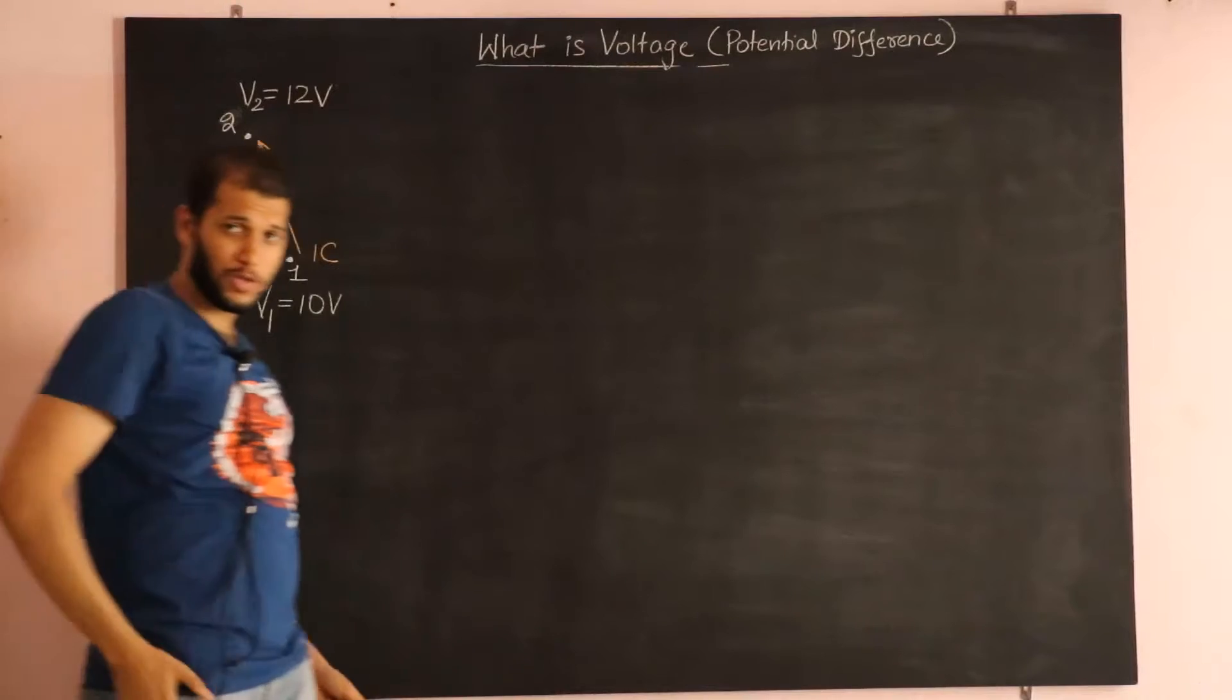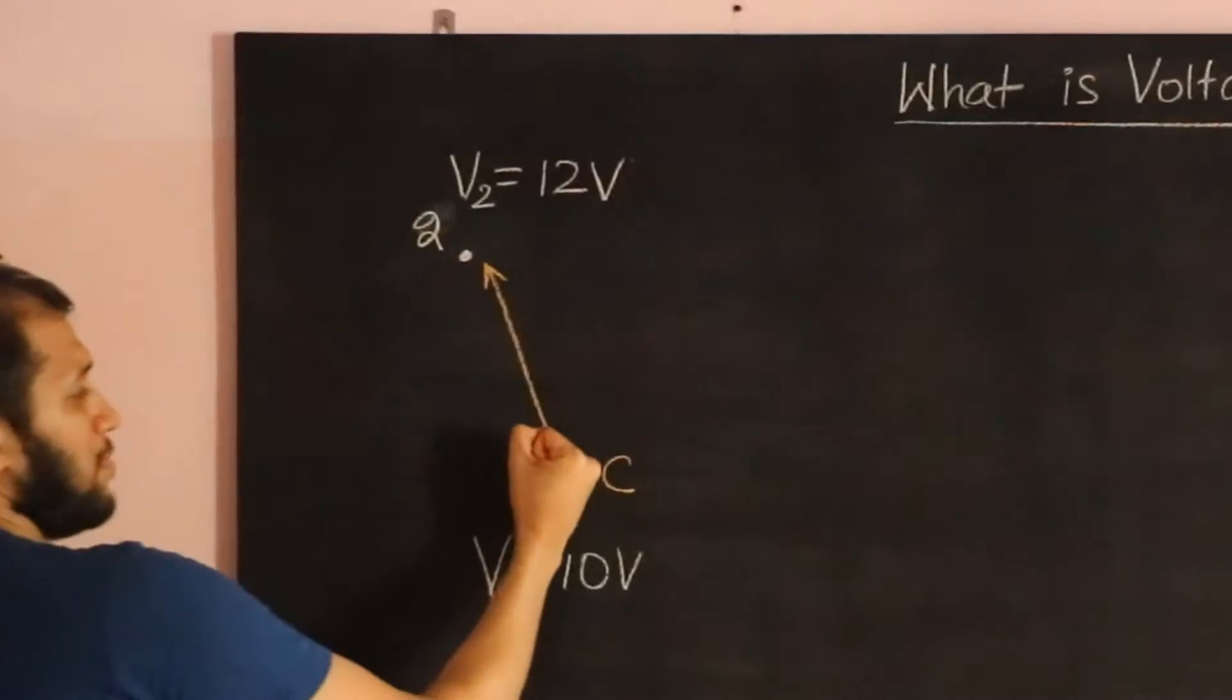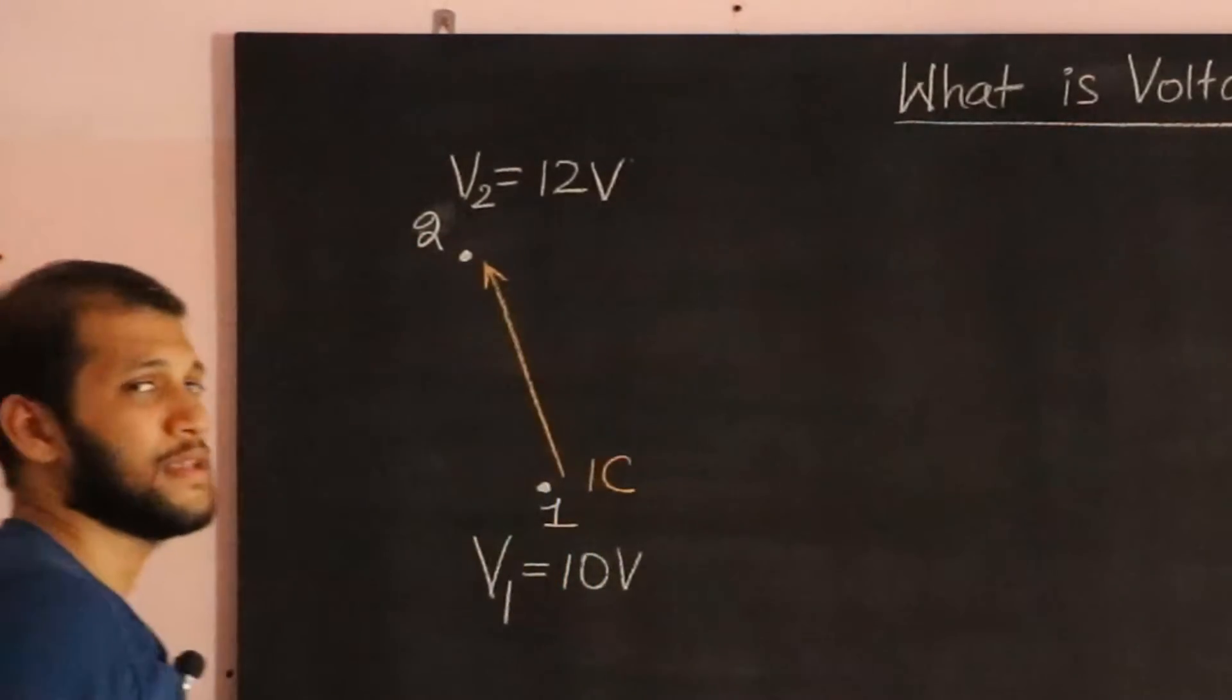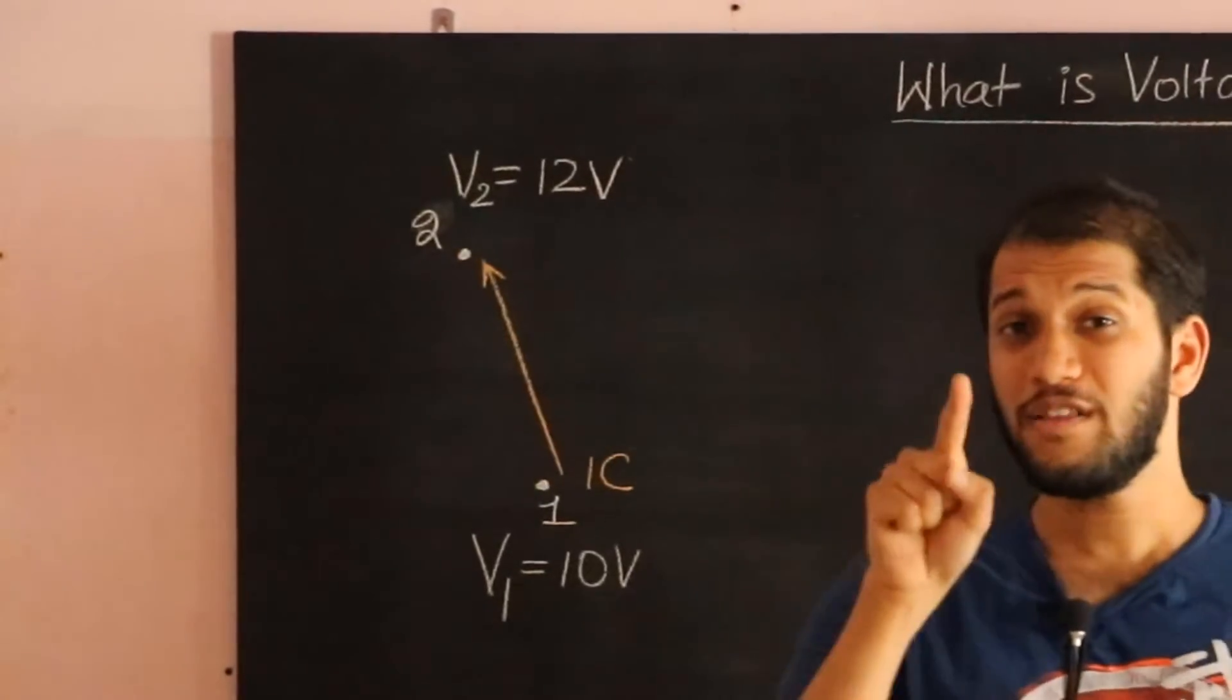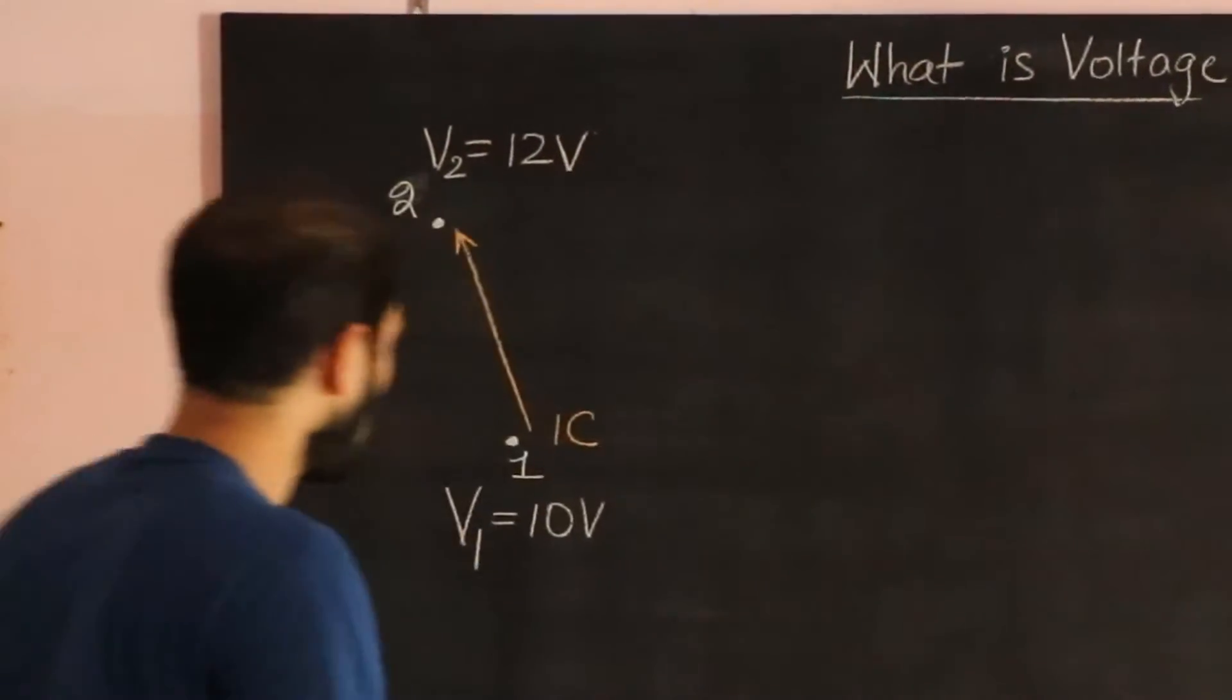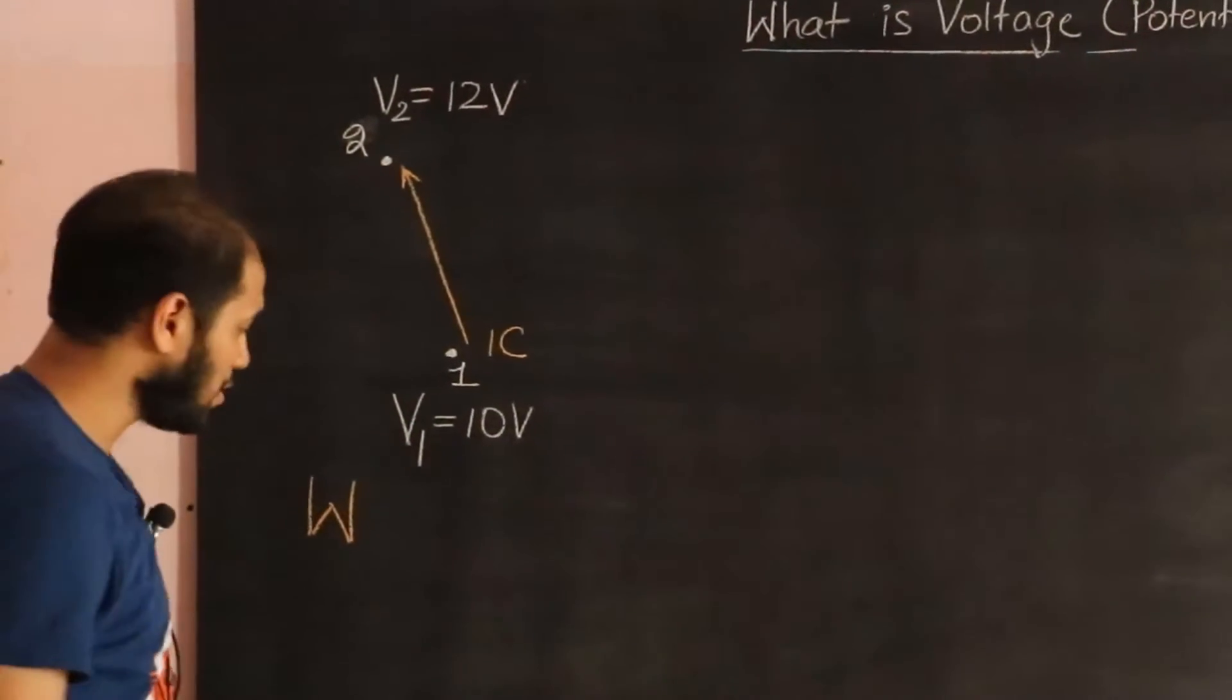you took a coulomb from your pocket and you move that coulomb from 0.1 to 0.2, then you would have to do work and the work that you would have to do will be, so the work that you will be doing,